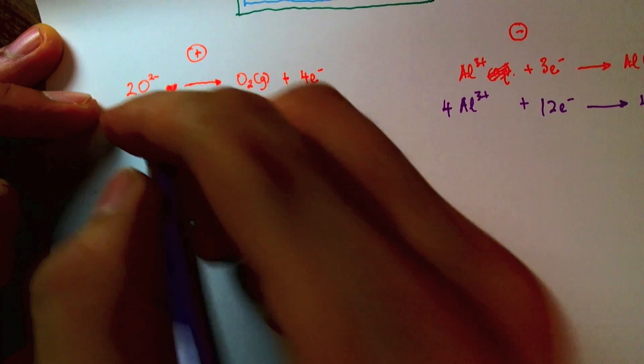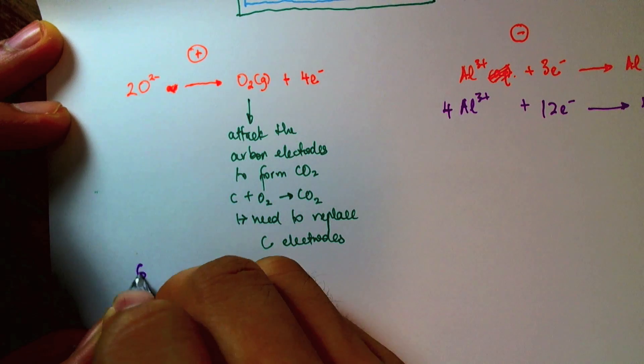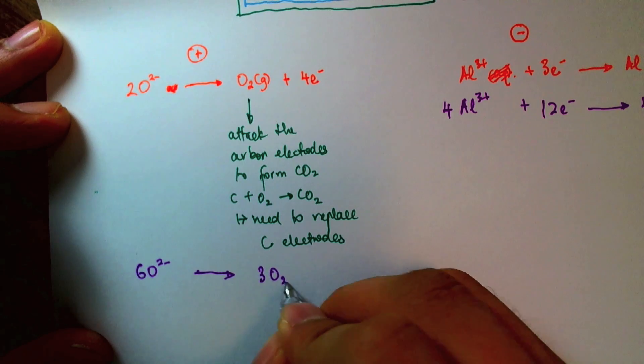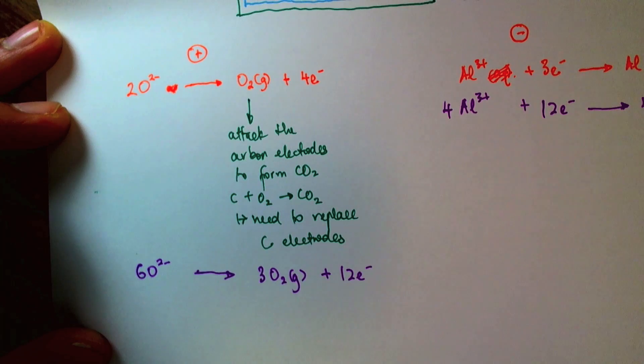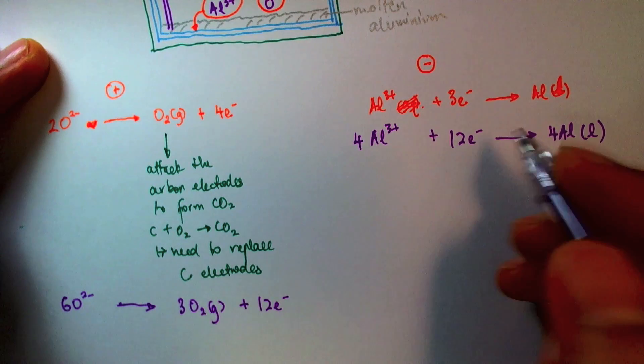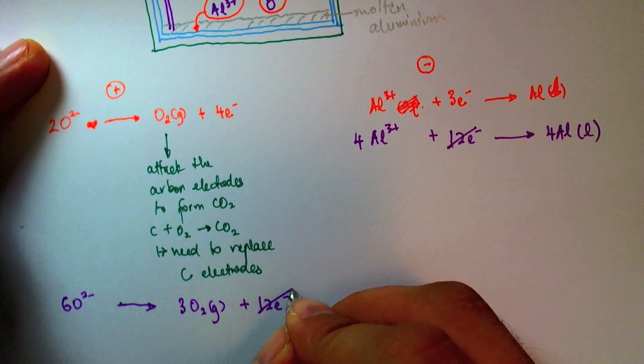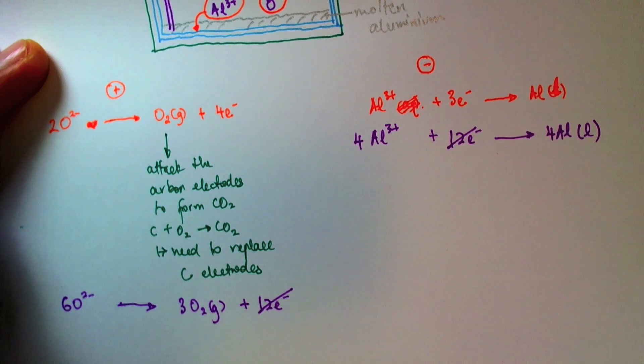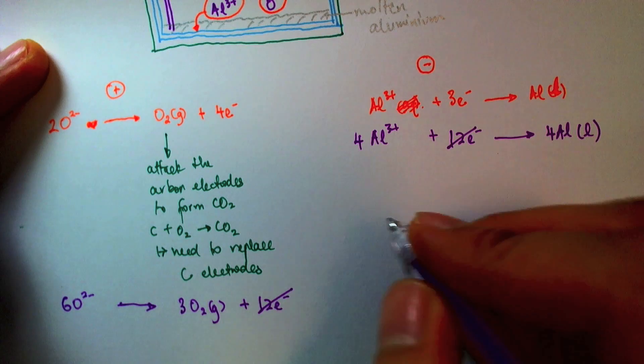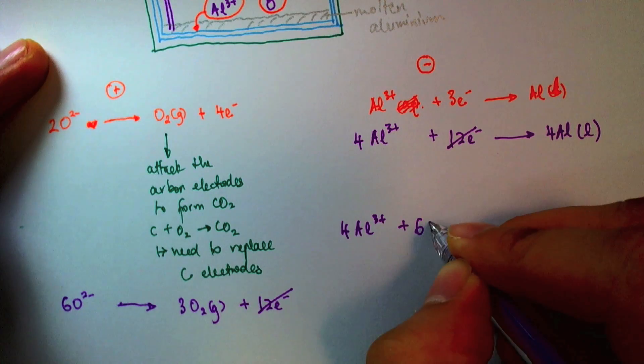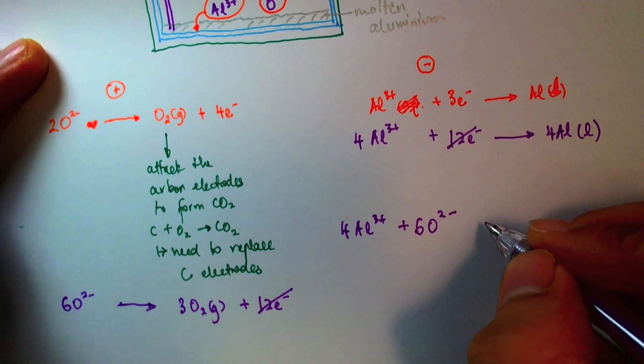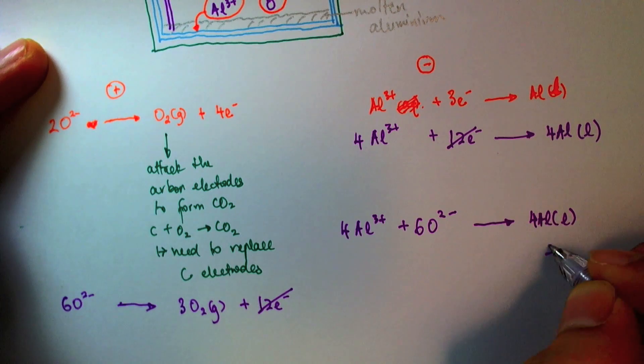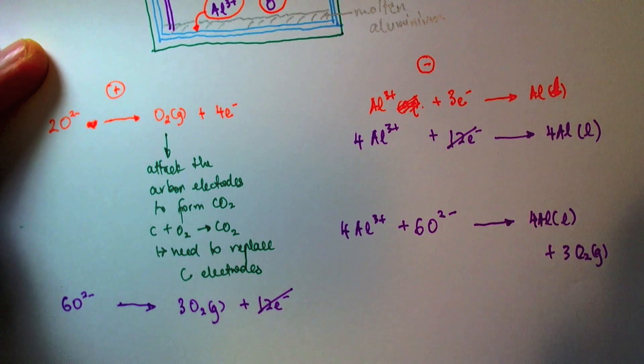Well, for the anode reaction, I multiply it by three. So that will give me six O²⁻ ions here, three O₂ molecules, and 12 electrons. So the 12 electrons on this side cancel the 12 electrons on that side. Because this is on the left side of the equation, it's on the right side of the equation. So what I end up with is an overall reaction of four Al³⁺ plus six O²⁻ gives me four aluminum liquid plus three O₂ molecules.